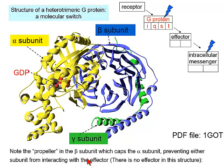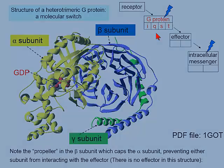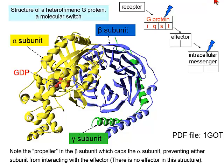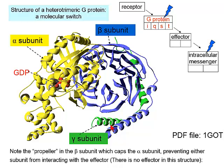The heterotrimeric G-protein is a molecular switch. It has three subunits: the alpha subunit binds the guanyl nucleotide — in this particular structure, a GDP is bound. The gamma subunit's major function, along with beta, is that they have alpha helices that stick into the cell membrane and provide anchors.